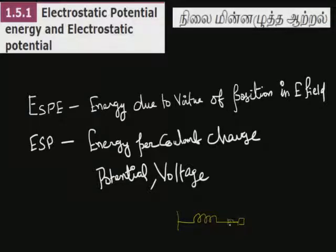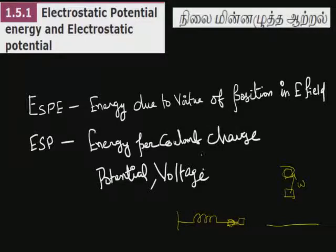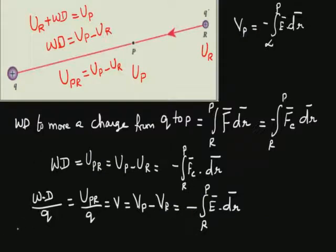Consider a spring-mass system: the mass moves forward due to compression of the spring, and some work is done stored as potential energy. Similarly, on Earth's surface, a mass raised to a particular height has work done against gravitational force, stored as gravitational potential energy. Similarly, within the electric field region, a test charge moving from one point to another has work done equal to the electrostatic potential energy, and energy per coulomb charge is the electrostatic potential.